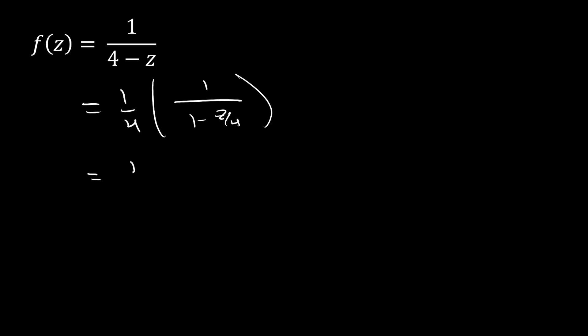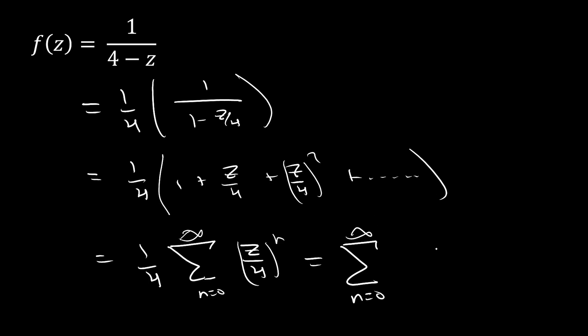Now we can just rewrite this where we're going to have a 1/4 outside, and then we're going to get 1 + z/4 + (z/4)² plus so on and so on. We can really just rewrite this then as 1/4 times the sum from n = 0 to infinity of (z/4)^n. We could simplify this down even more by bringing this 1/4 in, which is just going to give us a sum from 0 to infinity of z^n / 4^(n+1).